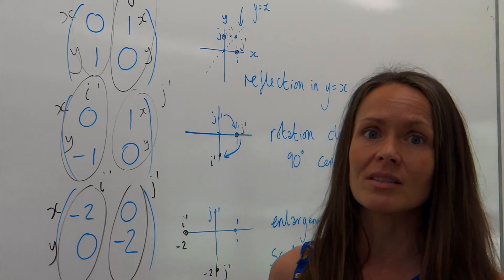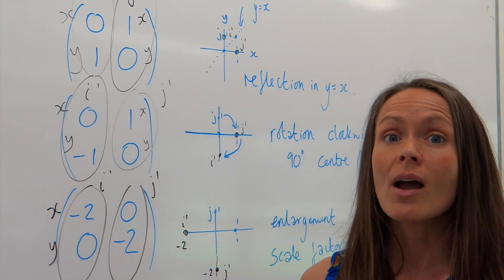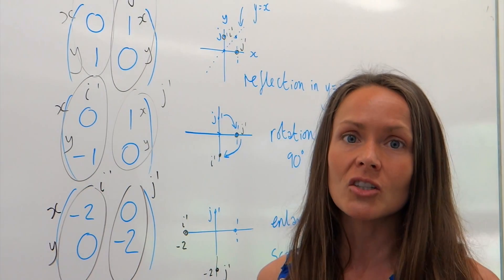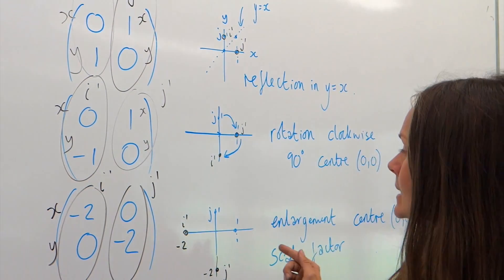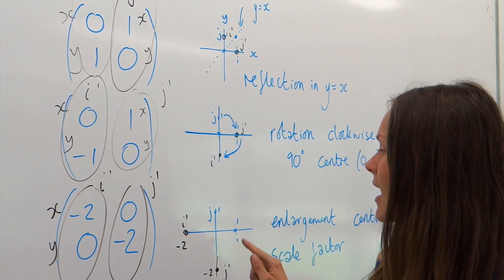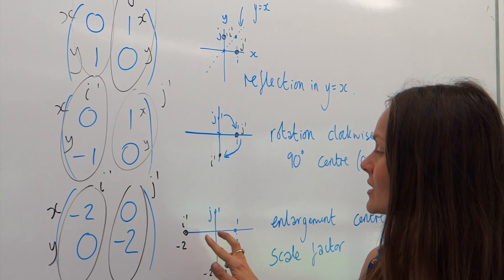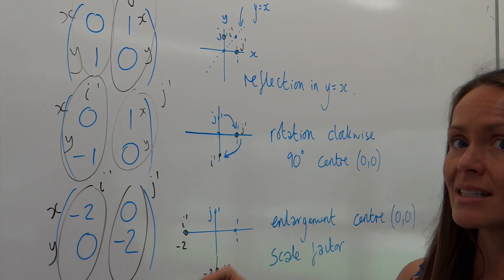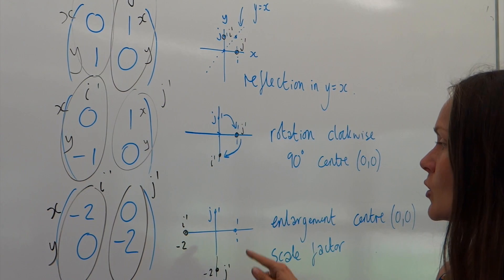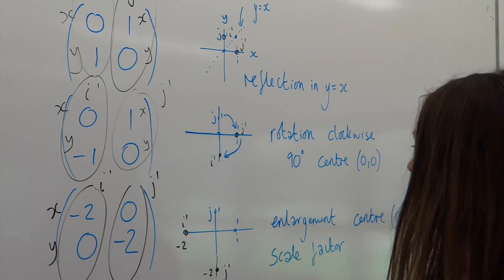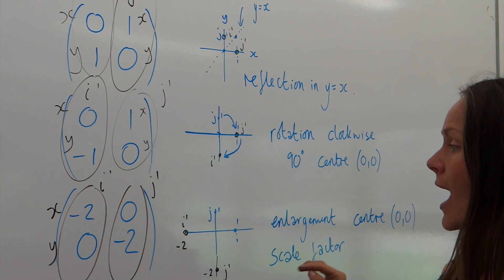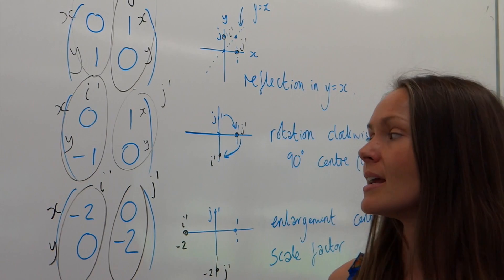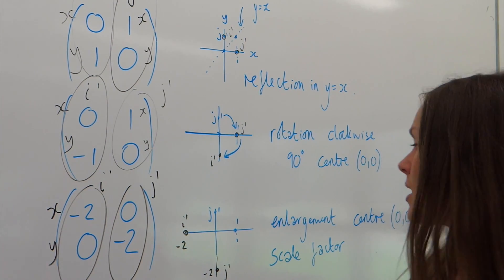In this one, we're looking at the points. And the distance is double, but on the other side. So, it means it's a negative scale factor, because the points are on the opposite side of the centre zero, zero. And because the distance has doubled, it's scale factor negative two.